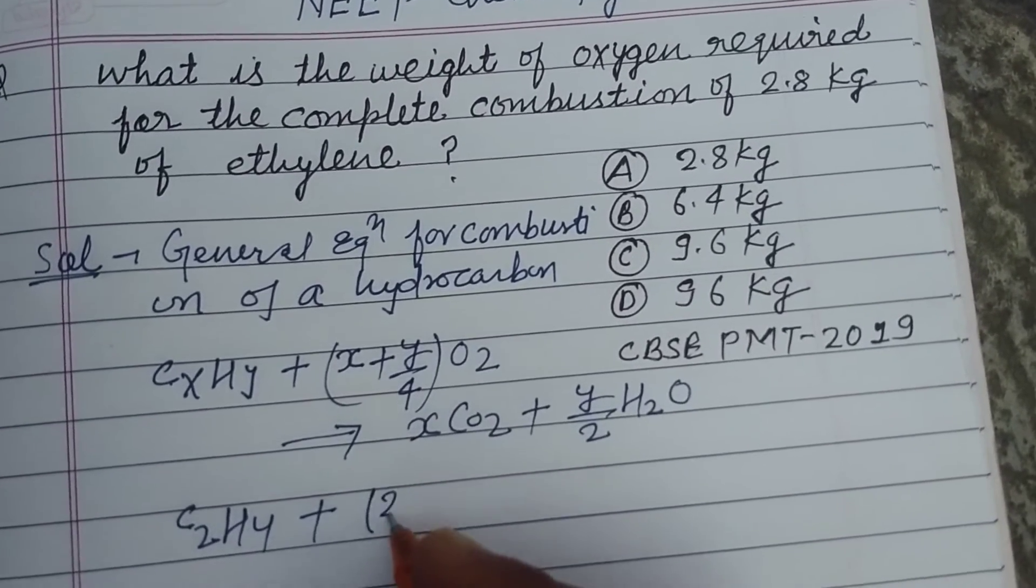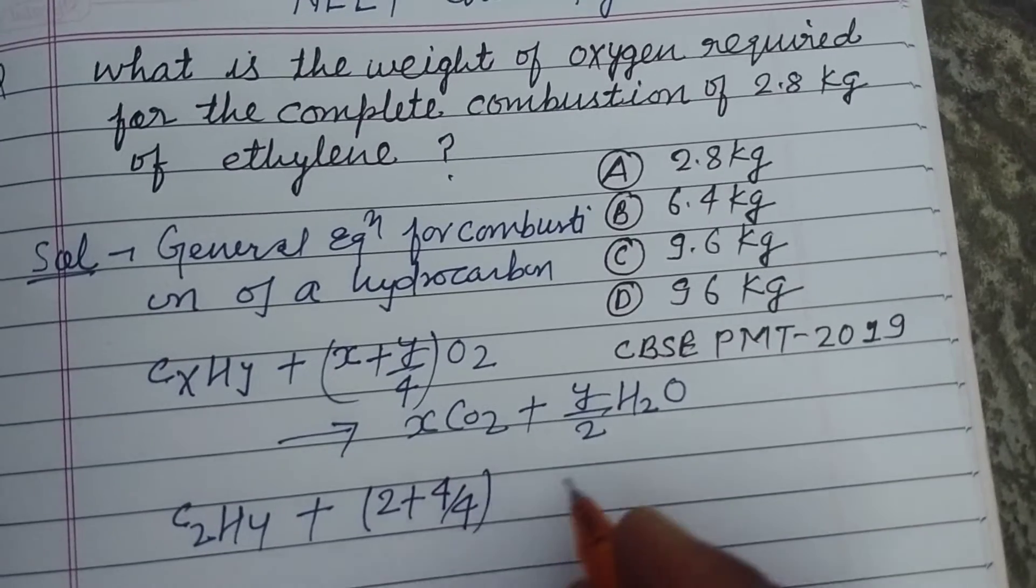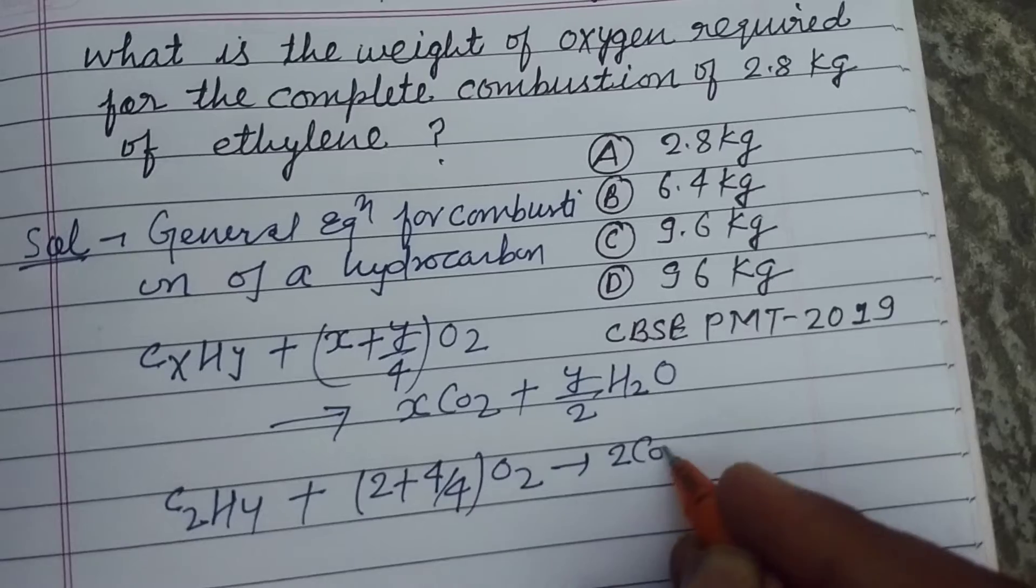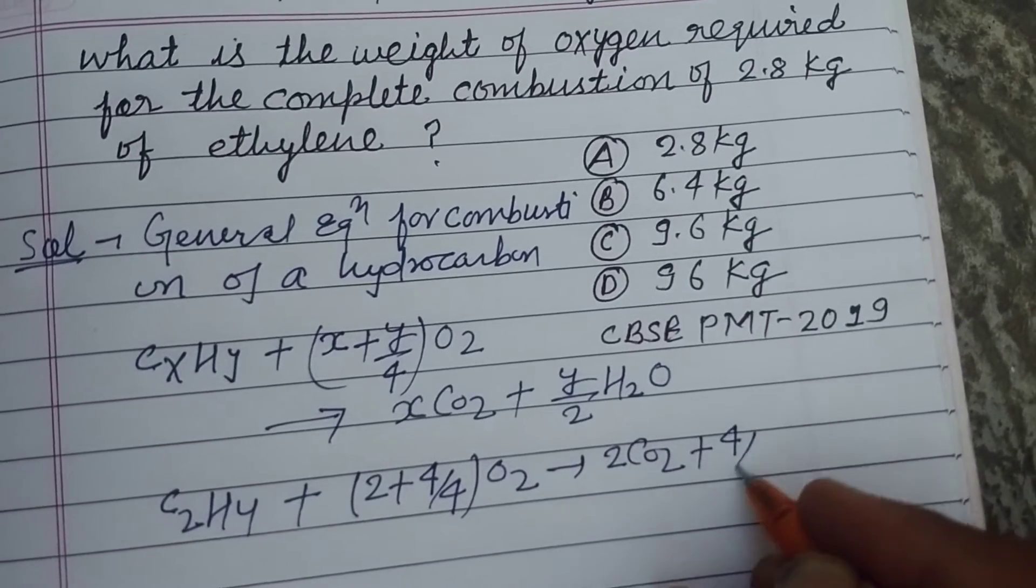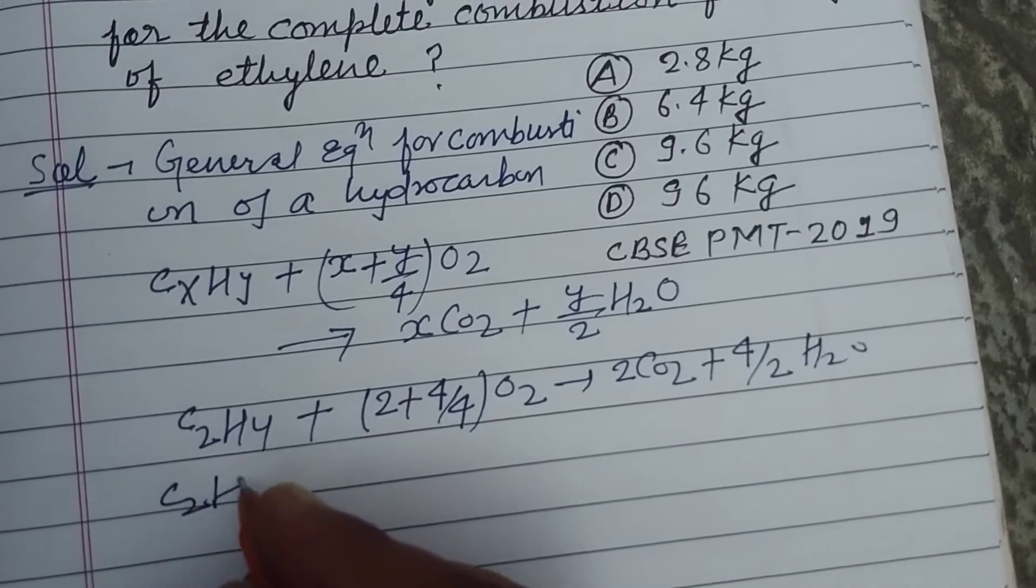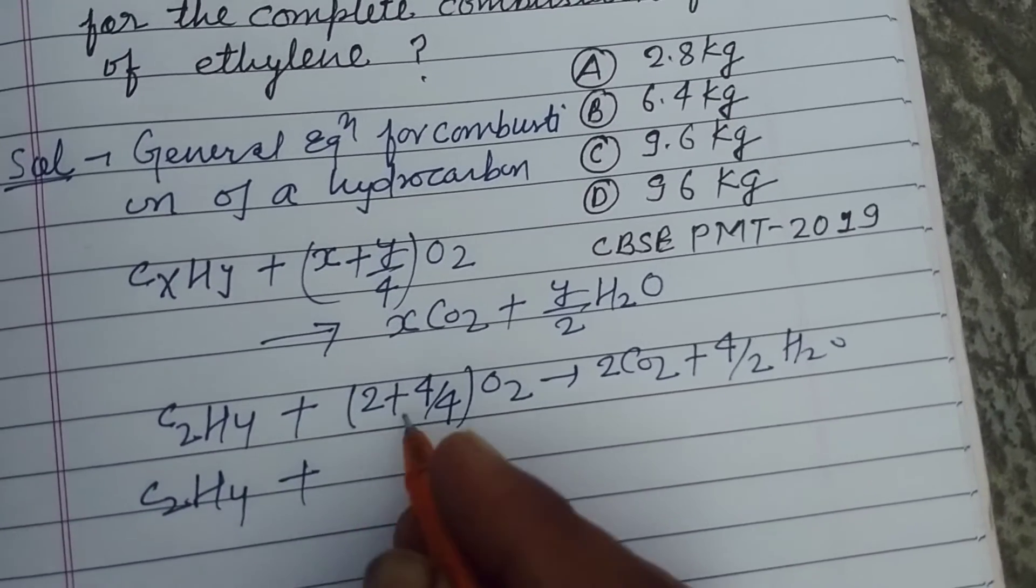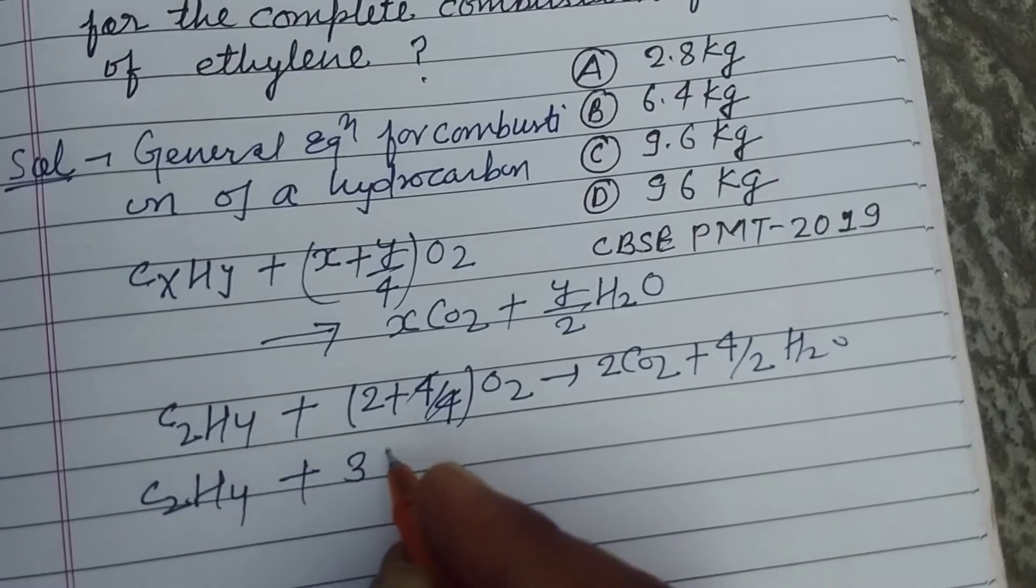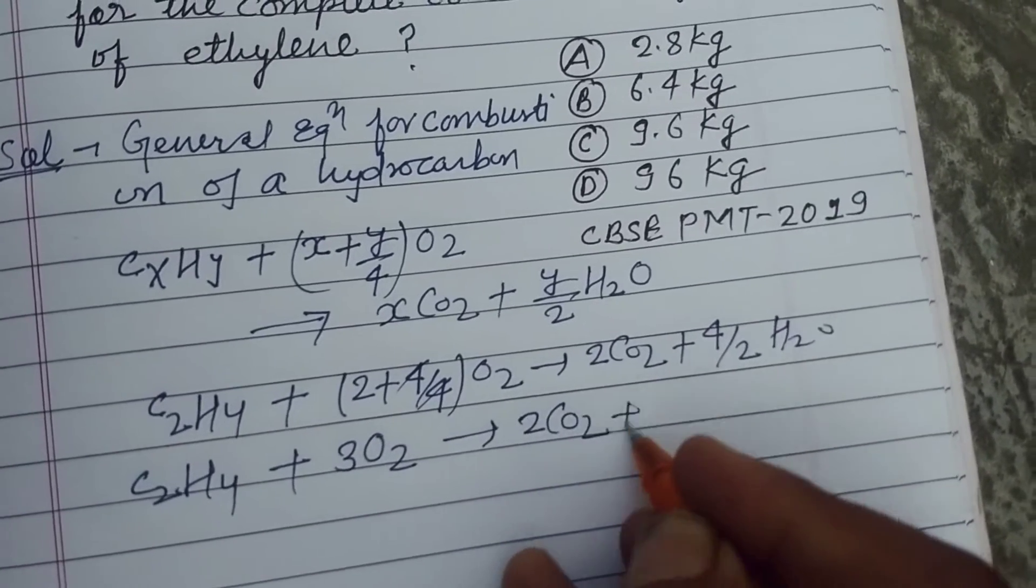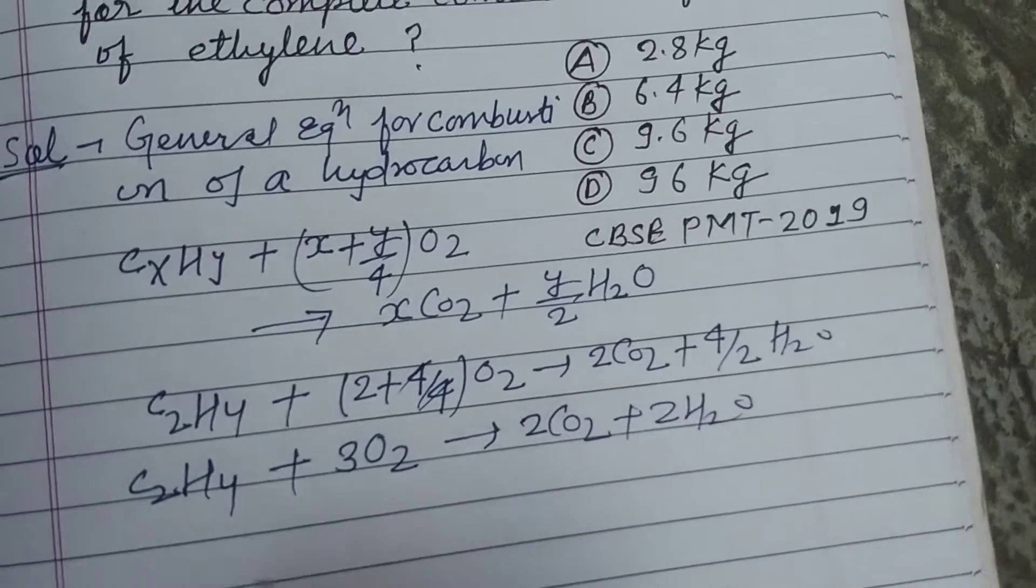2 plus 4/4 O2, it gives rise to 2 CO2 plus 4/2 H2O. So finally we got the combustion of ethylene with oxygen. So this is C2H4 plus 3 O2 equals 2 CO2 plus 2 H2O.